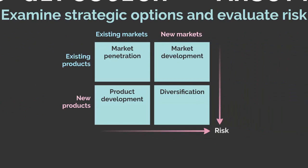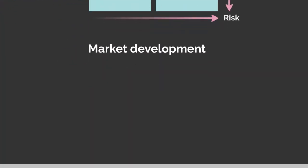Our second strategy is market development, which means offering existing products but finding new markets in which to sell them. It's a higher risk strategy than market penetration because the company might not understand the new markets as well as their original one — but they still have a strong understanding of their product since it isn't changing.